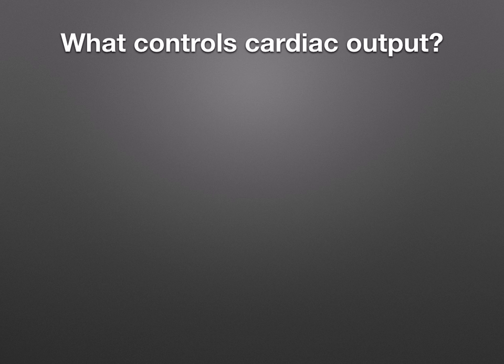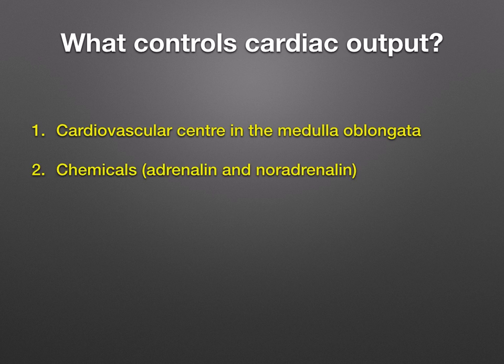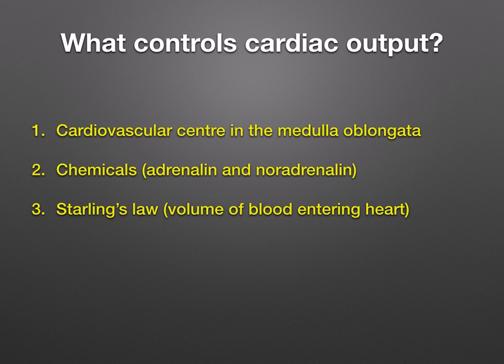We're going to discuss the factors that control cardiac output. The first is the cardiovascular center and the medulla oblongata. Chemicals, for example adrenaline and noradrenaline. We're also going to look at Starling's law, which is to do with the volume of blood entering the heart. Here are two new terms you're going to come across: baroreceptors and chemoreceptors.